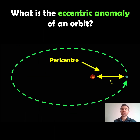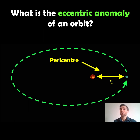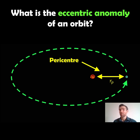Before we do that, let's quickly revisit an elliptical orbit and note what the pericentre is. The pericentre is the shortest distance between the two objects. The example here is a star and a planet, where the planet is orbiting the star, and it's when the distance between those two is the shortest. This is an important reference point for quite a lot of the orbital elements. The pericentre can also be known as the periapsis or the perihelion, depending on the context of the orbit.